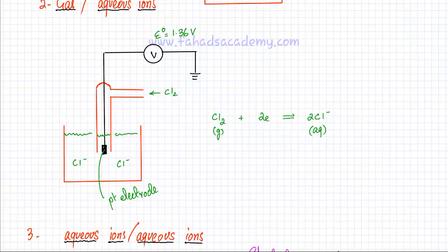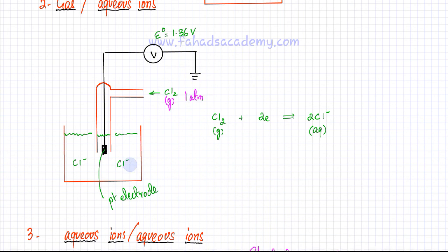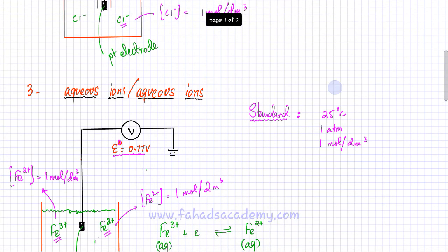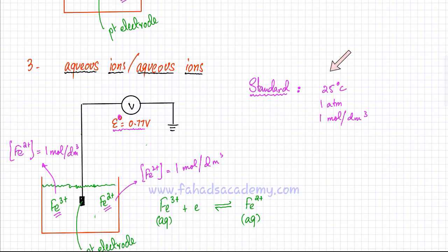These standard conditions apply to the gas and aqueous ions electrode as well. For the Cl₂ electrode, Cl₂ gas should be at a pressure of one atmosphere, and the Cl⁻ ions in solution should have a concentration of one mole per decimetre cubed. As long as conditions meet the standard — temperature of 25°C, pressure of one atmosphere, and solution concentration of one mole per decimetre cubed — then the electrode potentials obtained are called standard electrode potentials.